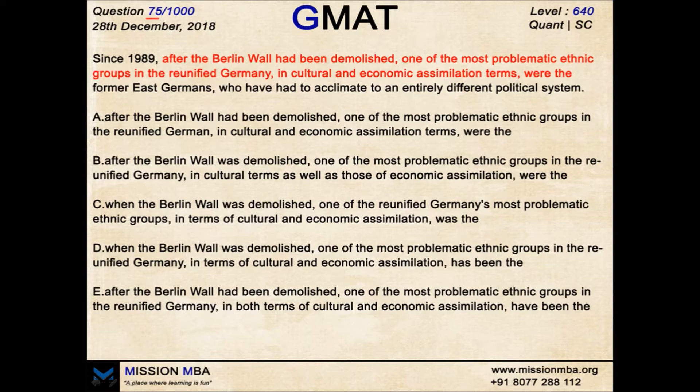Since 1989, after the Berlin Wall had been demolished, one of the most problematic ethnic groups in the reunified Germany in cultural and economic assimilation terms were the former East Germans, who have had to acculturate to an entirely different political system. Looks complex — what is this sentence talking about? Three lines and a lot of modifiers. Let's try to rectify it.